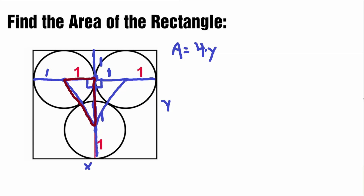So how do we find this value? Remember, the equation for a right triangle is a squared plus b squared equals c squared. Our a is 1, so we have 1 squared plus b squared — the height here is what we're trying to find, and that's our b value — equals c squared. Our c is the hypotenuse. The hypotenuse goes from the middle point to the edge of the circle, so that's the radius, and it does that twice. So c equals 2 times the radius, meaning our c value is equal to 2.